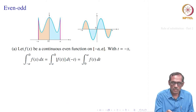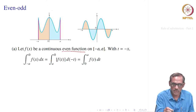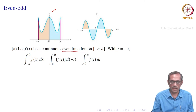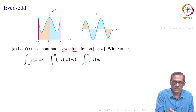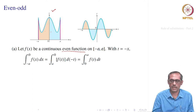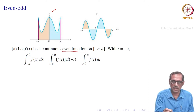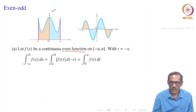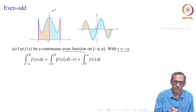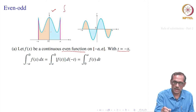Suppose we have an even function, so f(x) = f(−x). Suppose we have the symmetric interval [−a, a] — it is a very restricted case we are considering: even function and limits from −a to a. If you take t = −x, we would get the integral from −a to 0 as a sum of two integrals: the integral from −a to 0 of f plus the integral from 0 to a of f.